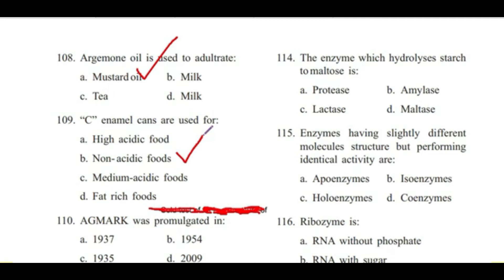Certain foods, when heated in plain tin, liberate hydrogen sulfide gas, which reacts with metals to form metallic sulfides. Meat can be stored in SR cans or C-enamel cans. Question 110: Agmark was promulgated in — 1937, 1954, 1935, or 2009? Answer is A, 1937.